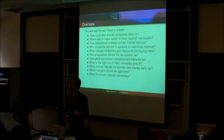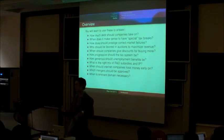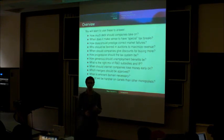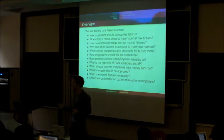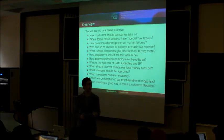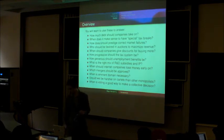When is eminent domain necessary in order to get property together so we can build a bridge or a road or a research facility? And when is it an undue violation of property? When should we be harsher on collusion or cartels that raise prices versus just any other company that would raise prices? And when is voting a good way to make a collective decision? Or when are there more efficient ways of doing it?